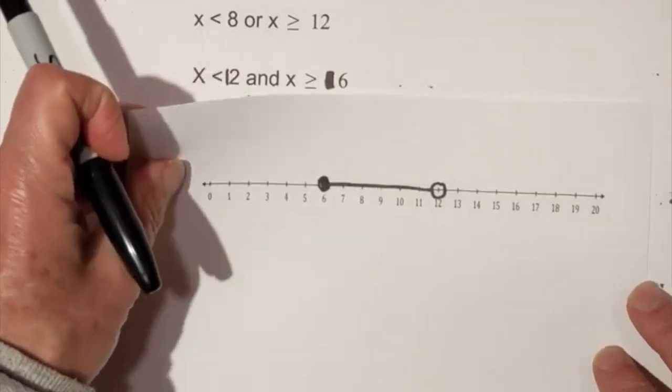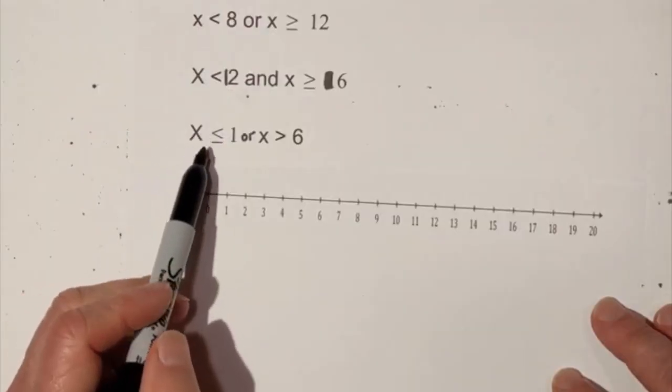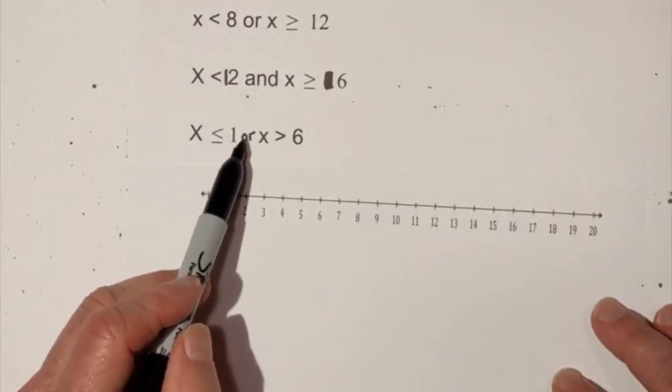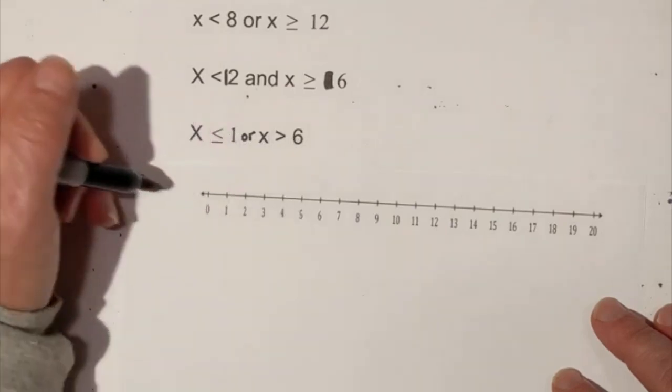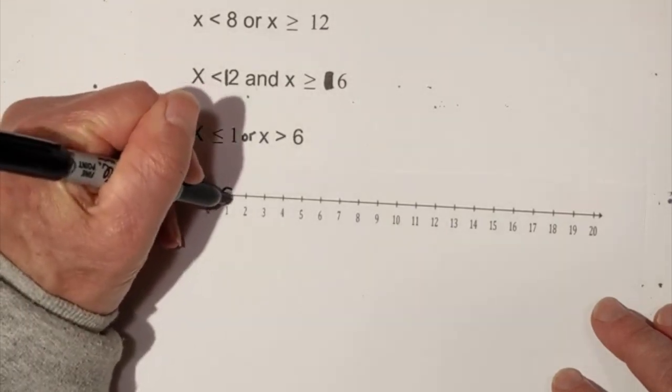And our last one is going to be less than or equal to 1 or greater than 6. So let's do the less than or equal to 1. Remember it's going to be closed.